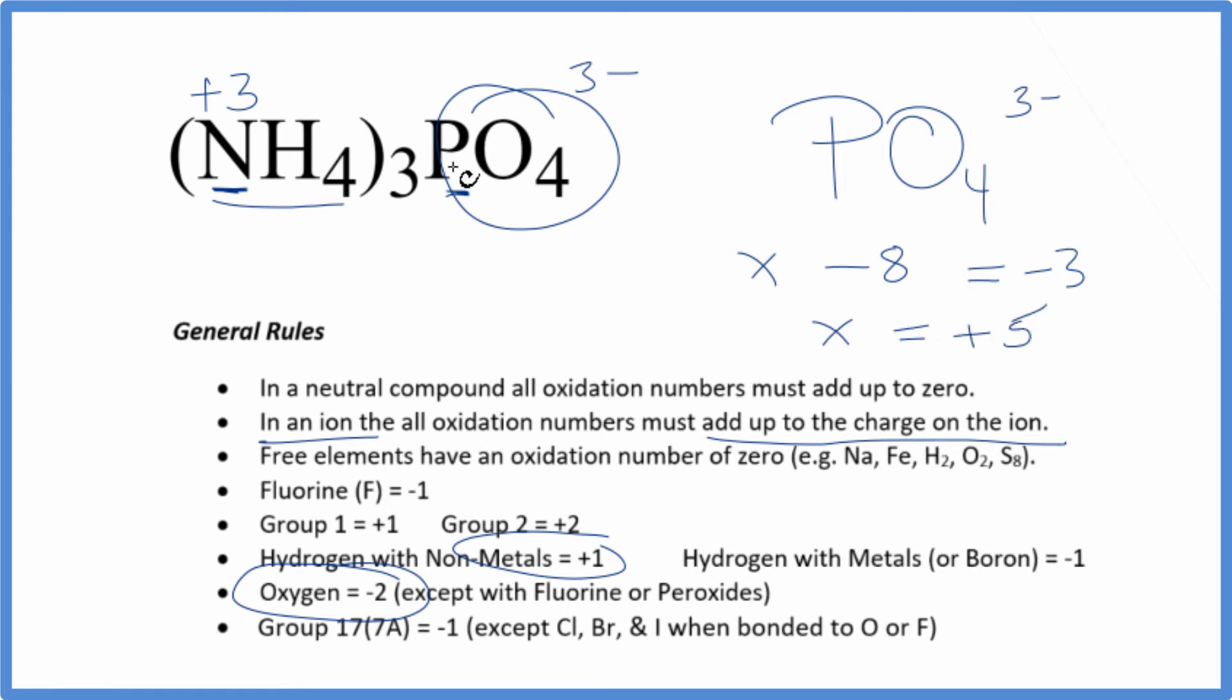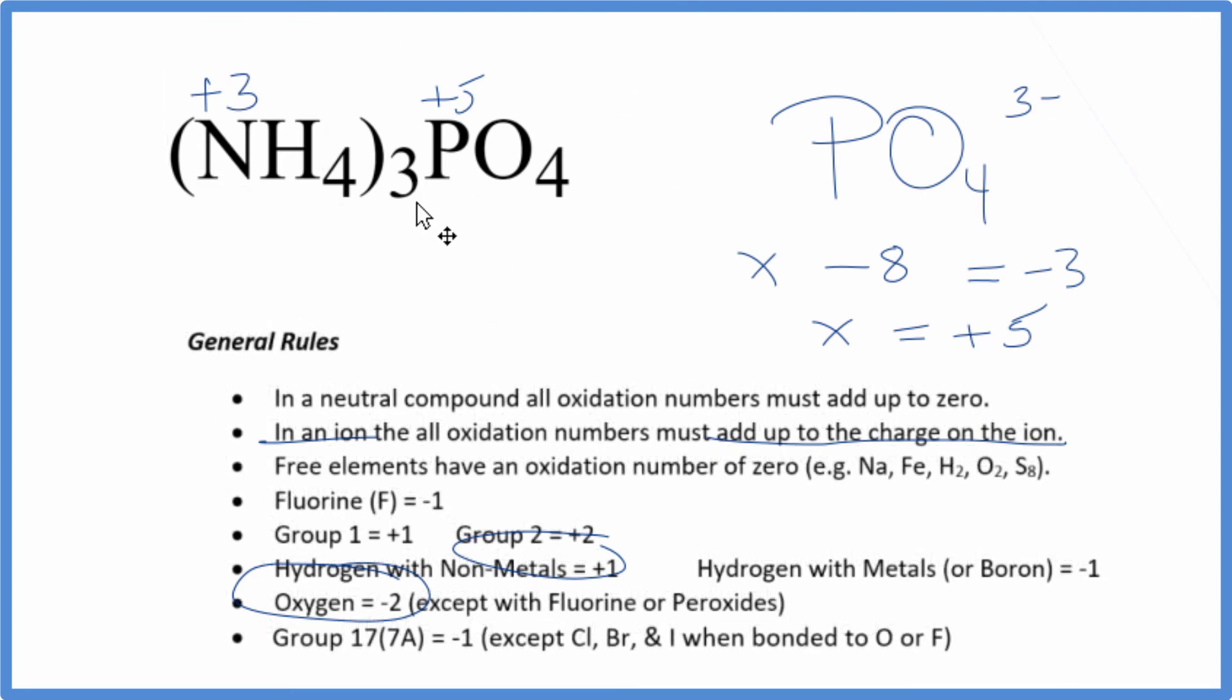So the oxidation number on the phosphorus here in the phosphate ion, that'll be +5. And we know each oxygen is -2. Let's clean this up. So that's how we figure out the oxidation number on the nitrogen and the phosphorus in ammonium phosphate. The key here is you have to recognize these polyatomic ions. You need to know their charge, and then know that the oxidation numbers add up to the charge on the ion.